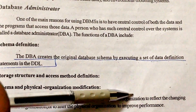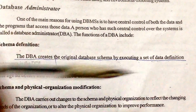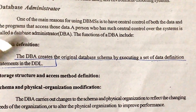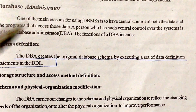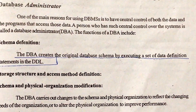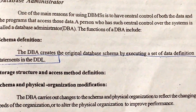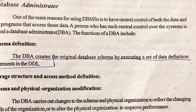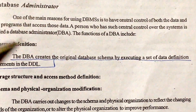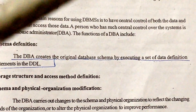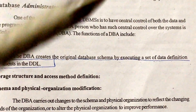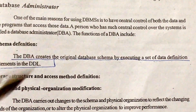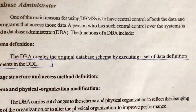Schema and physical organizational modification: the database administrator carries out changes to a schema and physical organization to reflect the changing needs of the organization. If the organization is growing or data types are changing, making all these adjustments is done by the database administrator. He has to align the database according to organizational needs from time to time to improve performance.